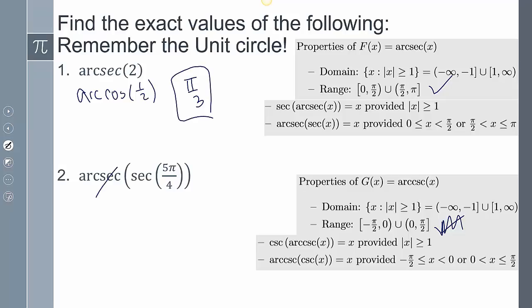Arcsecant of secant, those do cancel out because they are inverses of each other, and so I do have 5π/4. But 5π/4 is not on that domain there. And so because it's not on that domain, I do have to convert it. And so thinking about it, I know that there's 5π/4. Where else is my secant or my cosine going to be negative? That's going to be here at 3π/4. And so I can't use 5π/4. I have to use 3π/4 as my answer.